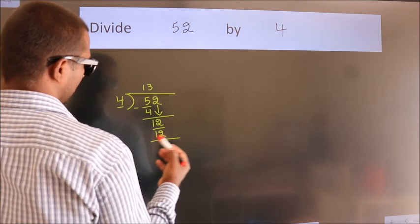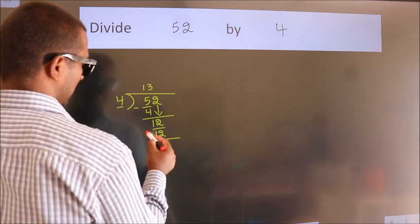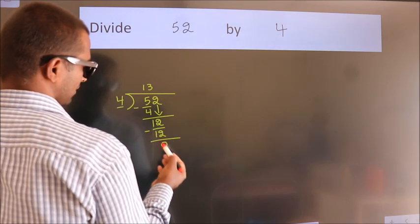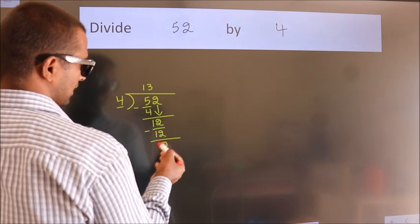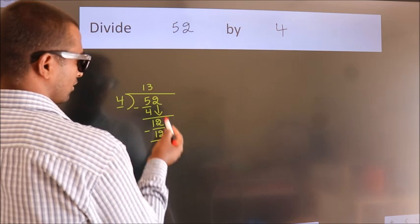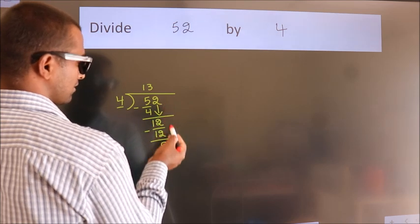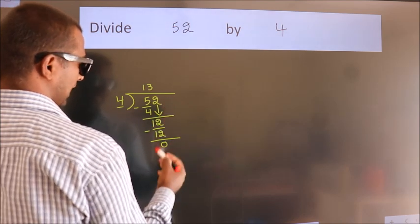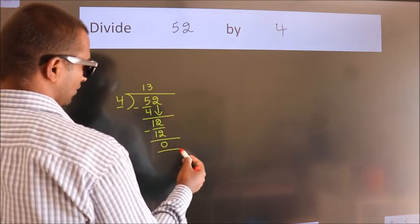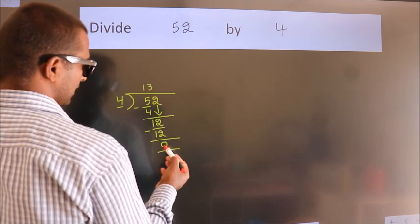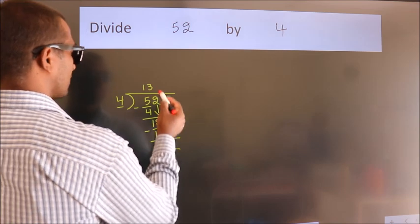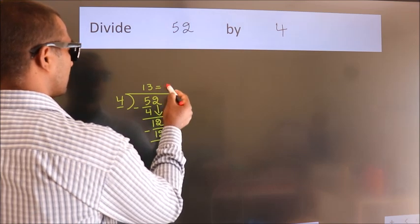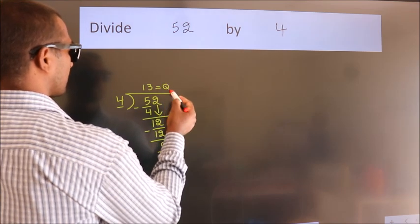Now we subtract. We get 0. After this, no more numbers to bring down, and we got remainder 0. So this is our quotient.